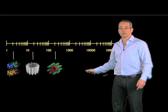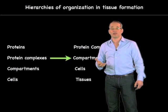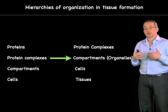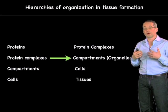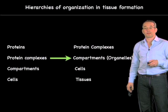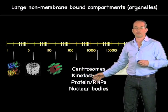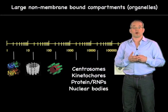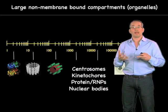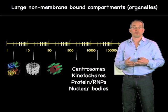But what about this big area here? It turns out, in this area, there are also a lot of complexes about which we understand very little. These are called compartments, or else organelles. How protein complexes organize into compartments is much less well understood than how proteins are organized into protein complexes. These various different structures are things like centrosomes, kinetochores, nuclear bodies — large non-membrane-bound compartments where many different protein complexes live together and undergo particular aspects of cell physiology.